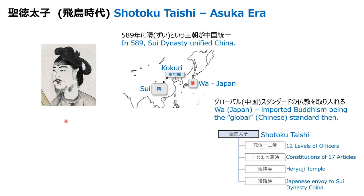The next topic is Shotoku Taishi, who lived in the Asuka era. To understand the background of that time: Shotoku Taishi was helping the lady emperor and he supported governing Japan.